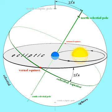Obliquity of the ecliptic is the term used by astronomers for the inclination of Earth's equator with respect to the ecliptic, or of Earth's rotation axis to a perpendicular to the ecliptic.